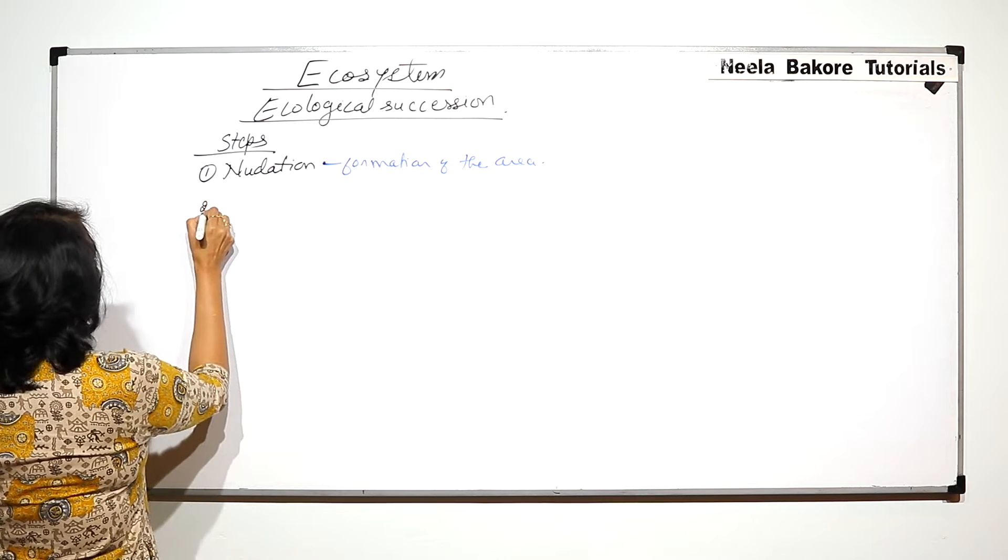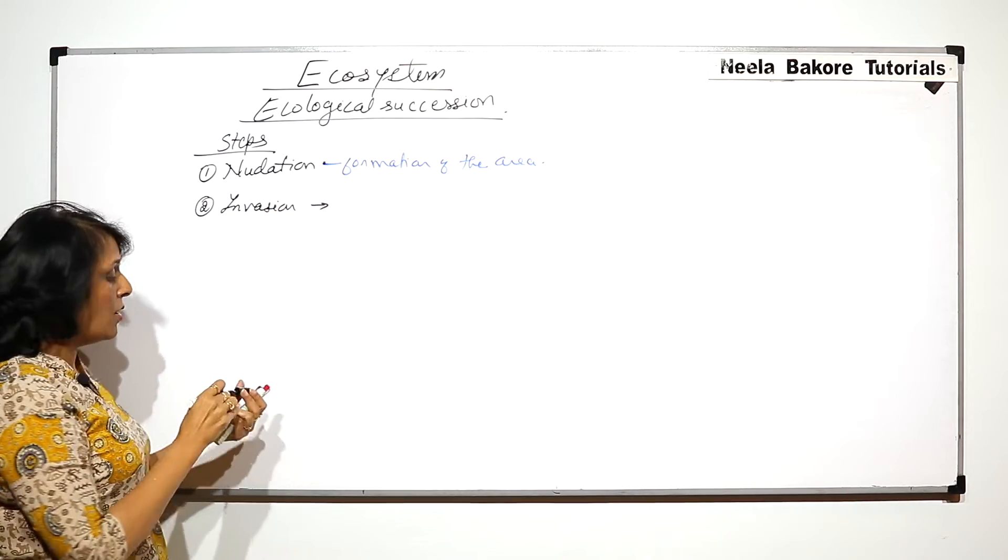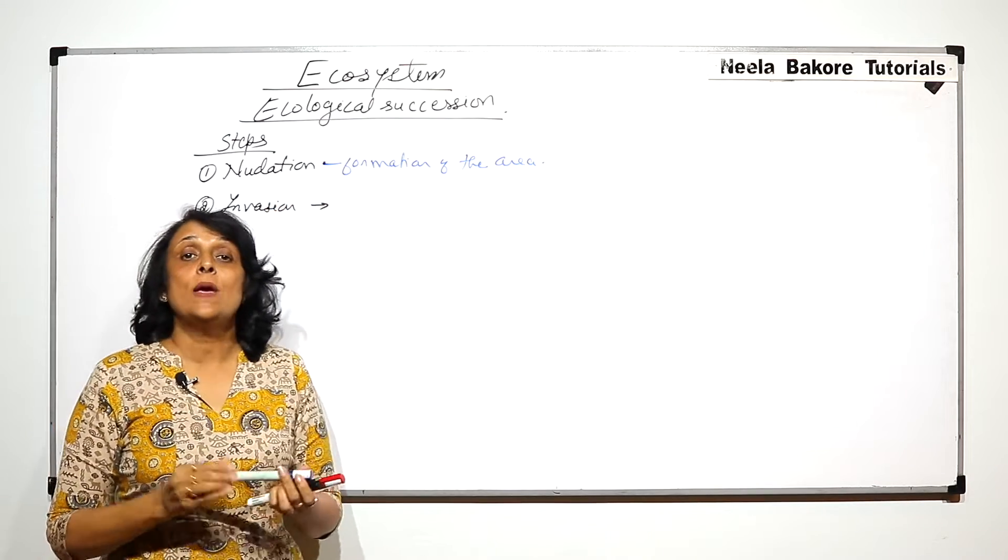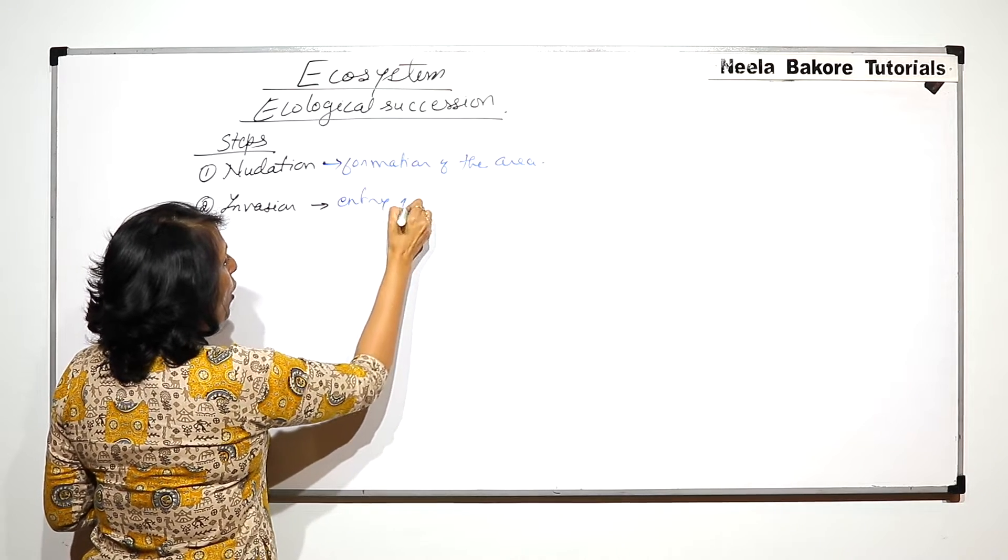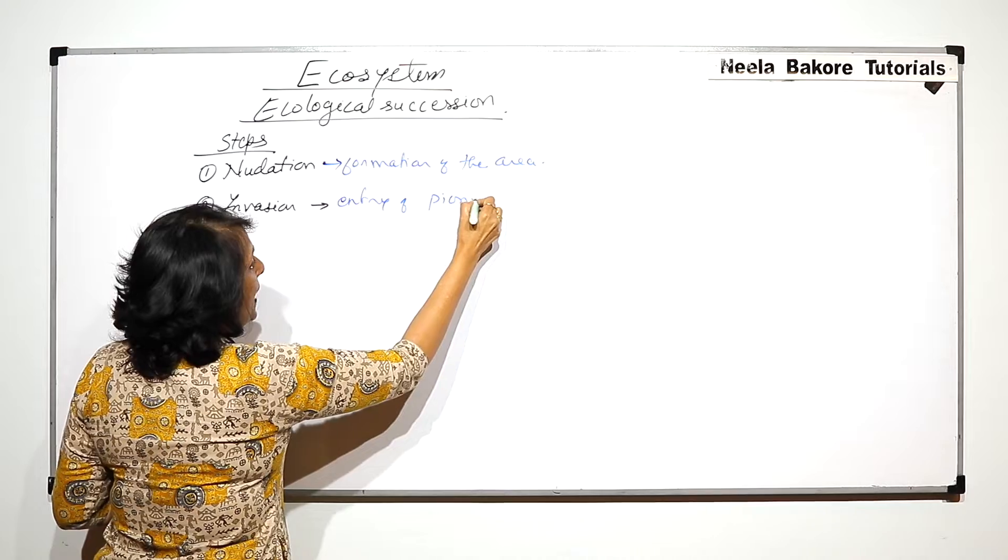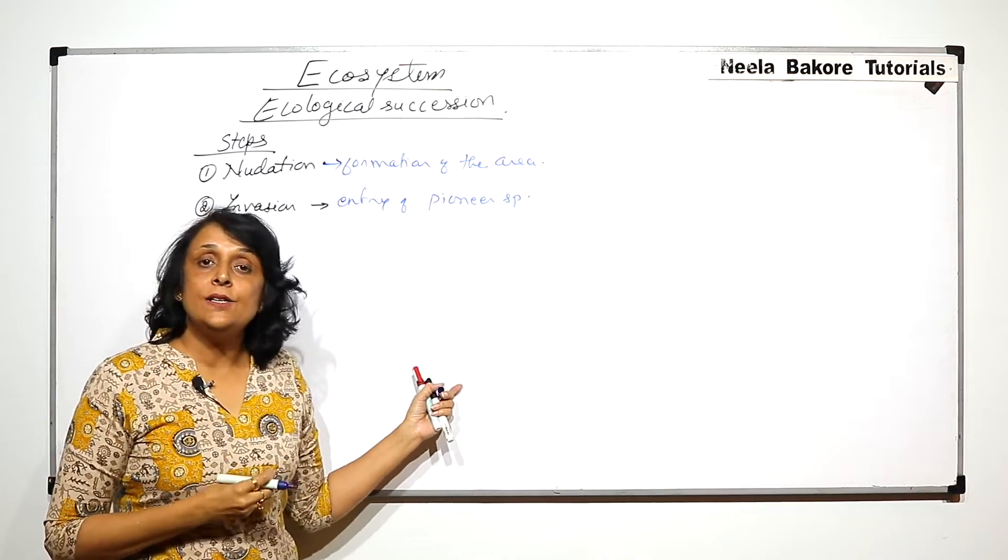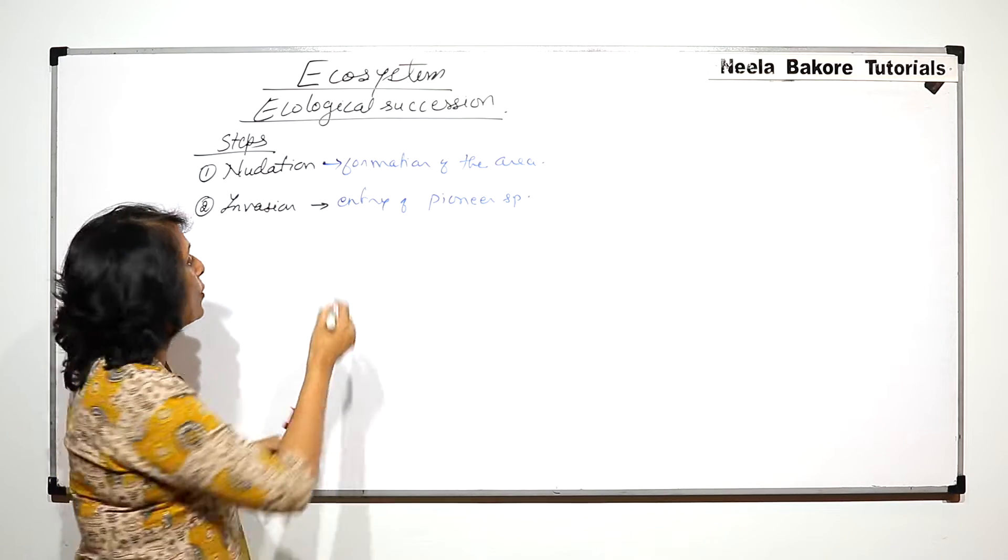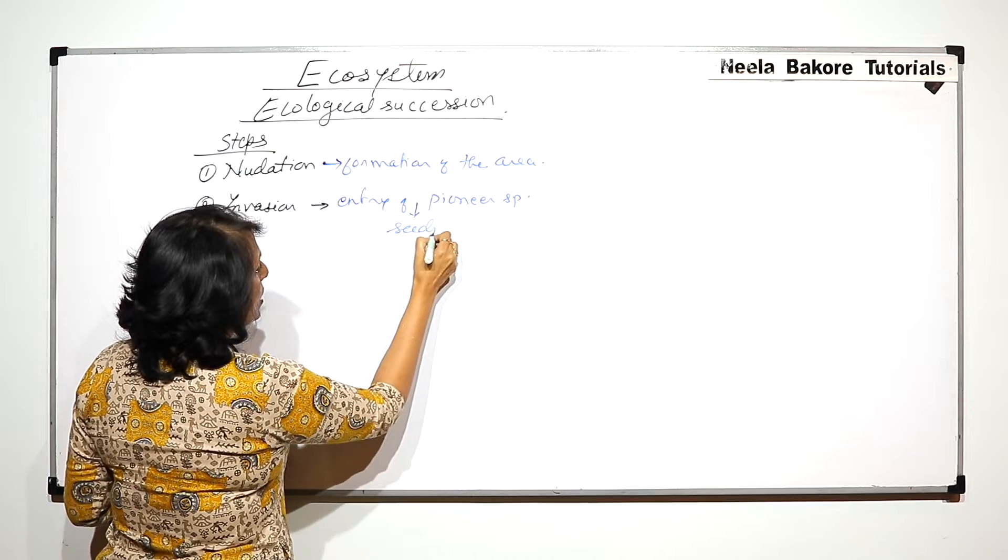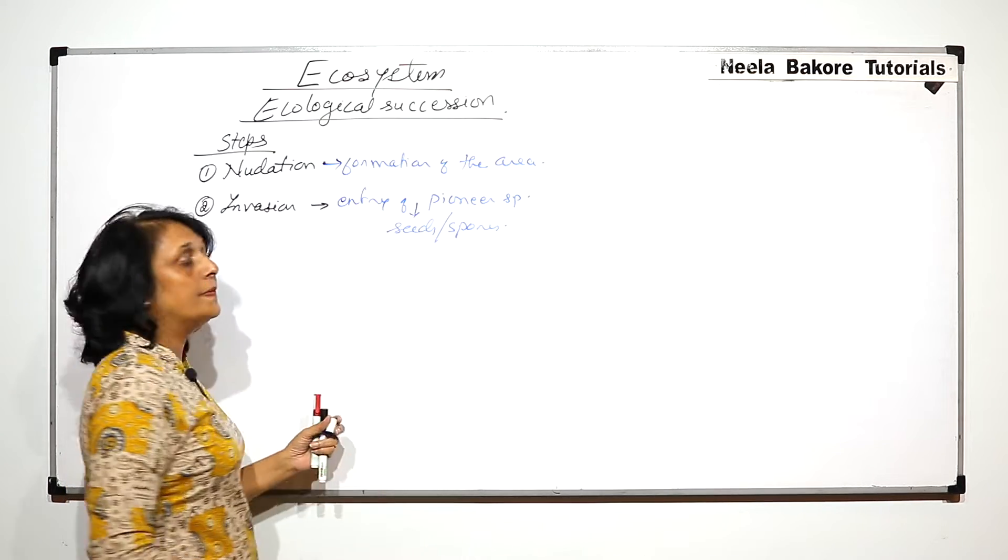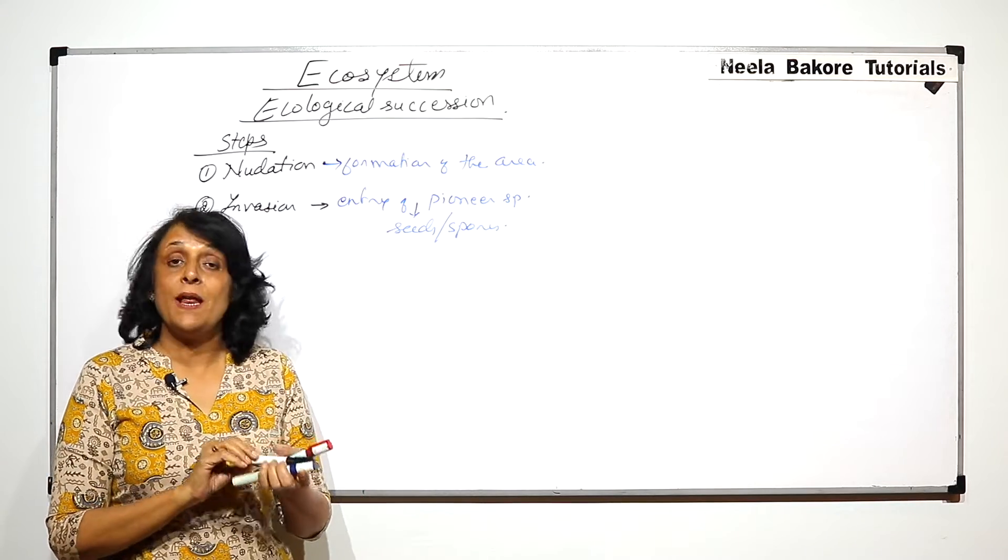Second step is invasion. The living organism has to invade this area. So this is entry of the pioneer species. And what exactly enters here are either seeds or spores. Entry of seeds or spores of that pioneer species would be the ones which would first enter this place.